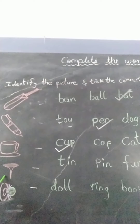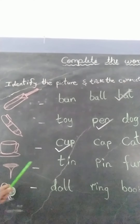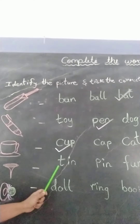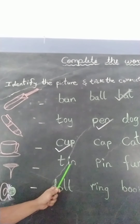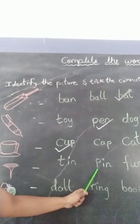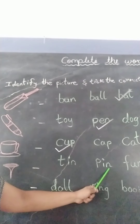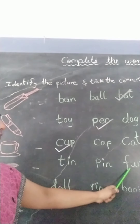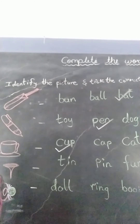Next picture is the picture of a pin. So let us see the words. First word is D-I-N, din. Next word is P-I-N, pin. Next word is F-U-N, fun.